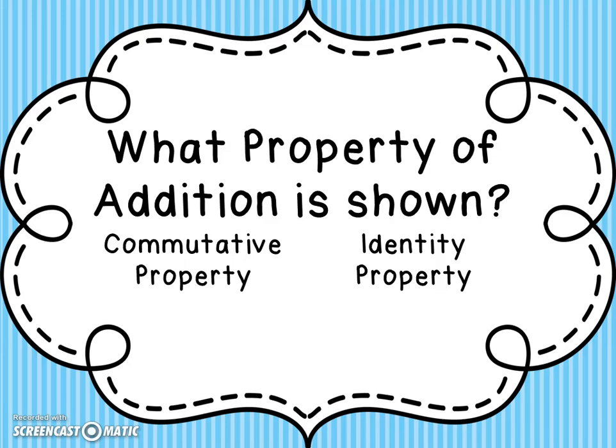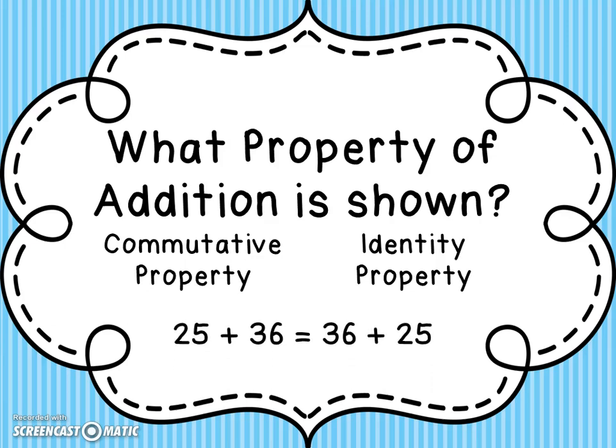Which property of addition is being shown in this sentence? 25 plus 36 equals 36 plus 25 — that is the commutative property.